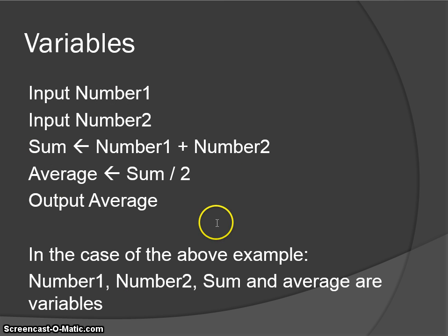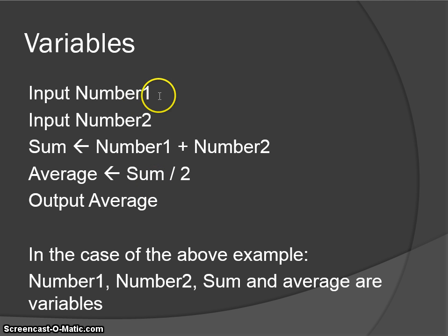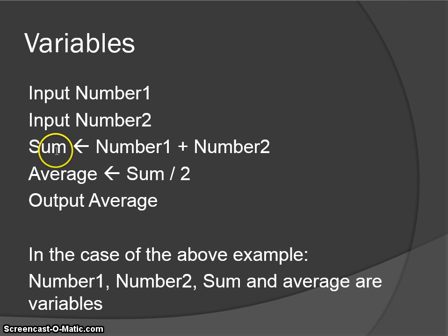In this example, the variables will be number1, because that is going to hold a number, number2, sum, and average. There are four variables within this program.